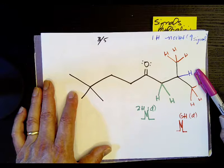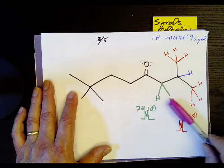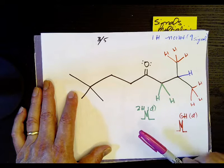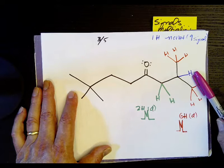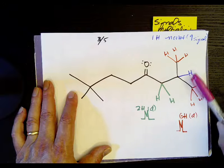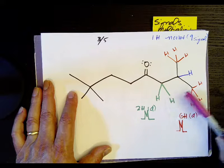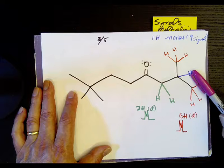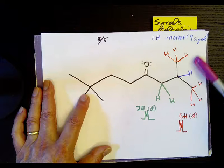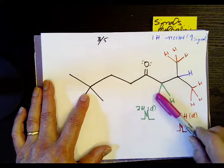Then we go to the green hydrogen. So the green hydrogen is next to one hydrogen and plus one. So this would be a doublet. So the six was a doublet, one blue one was nine signal, and the two green one was a doublet.